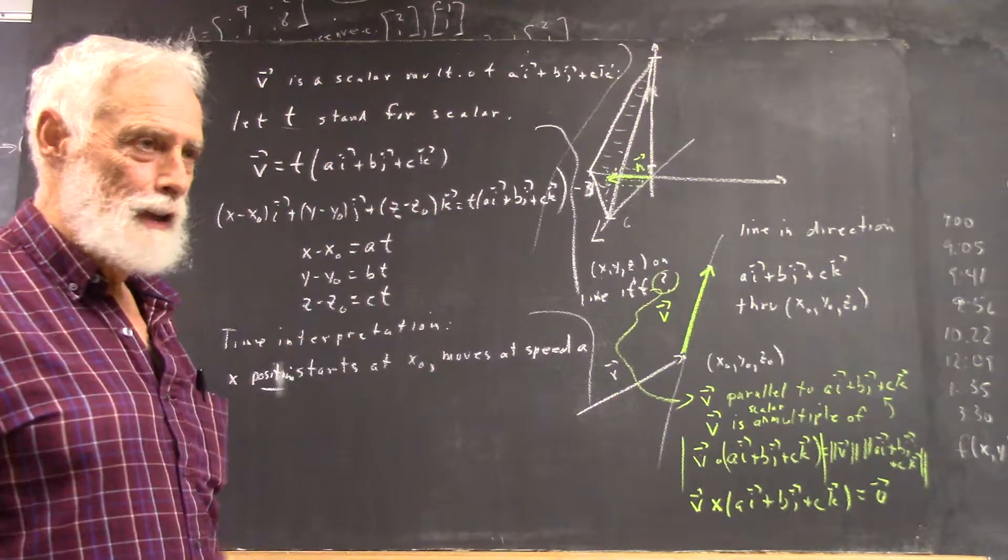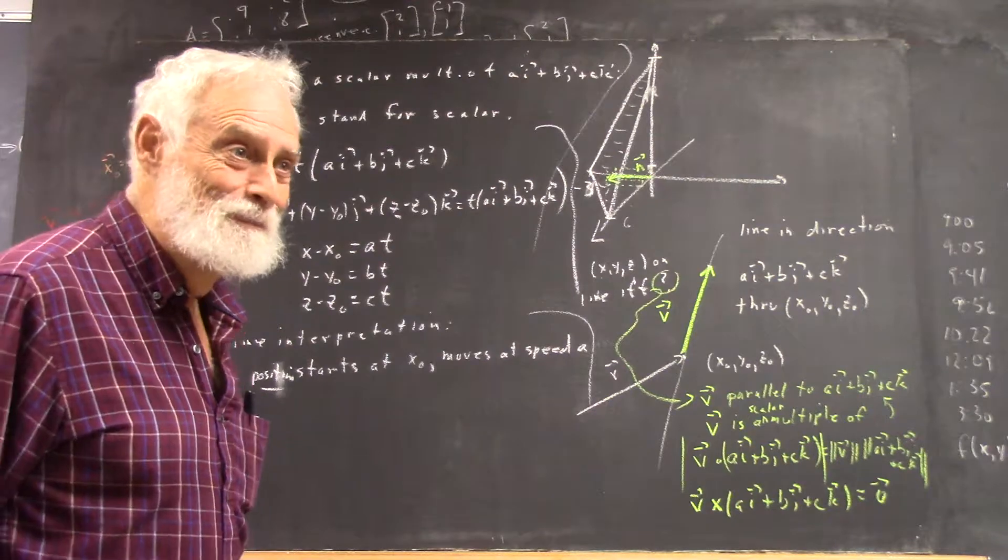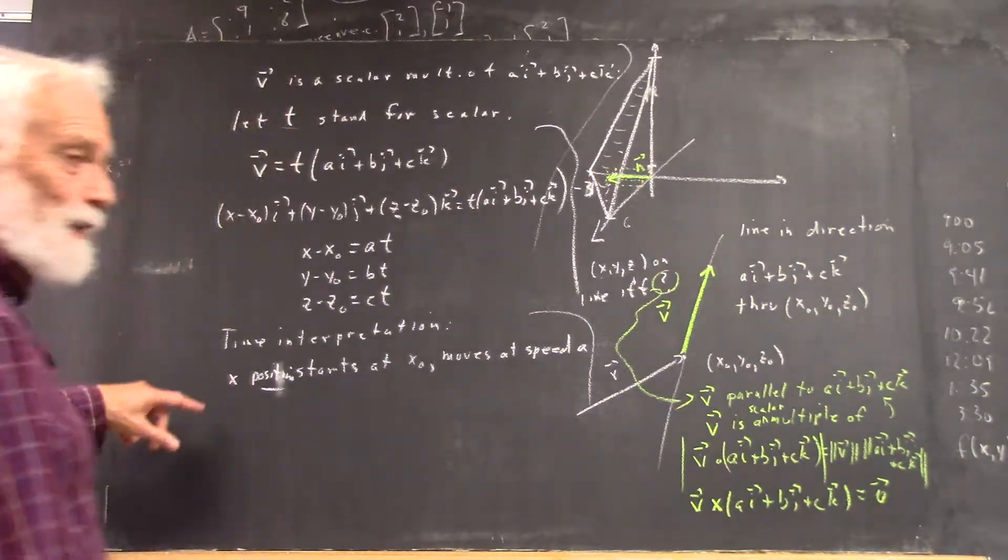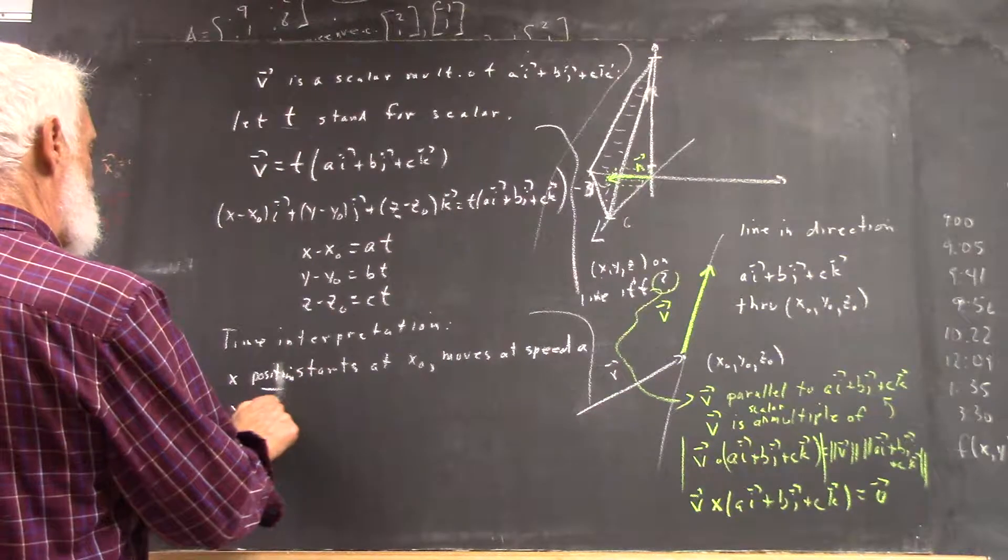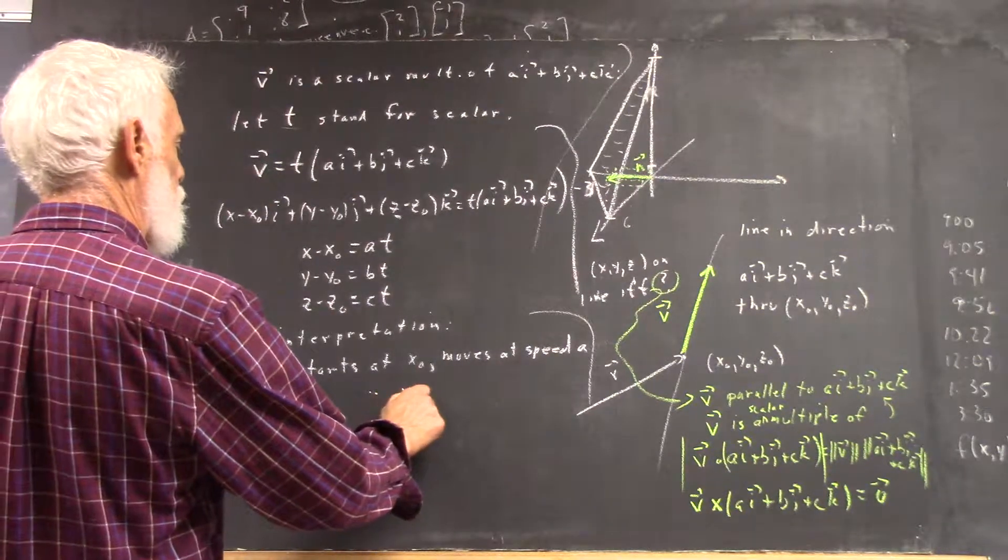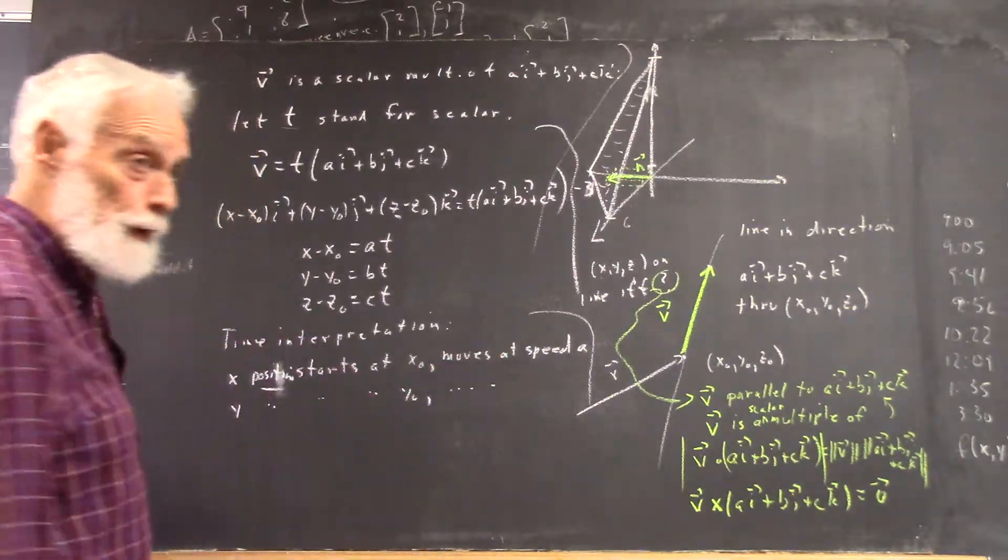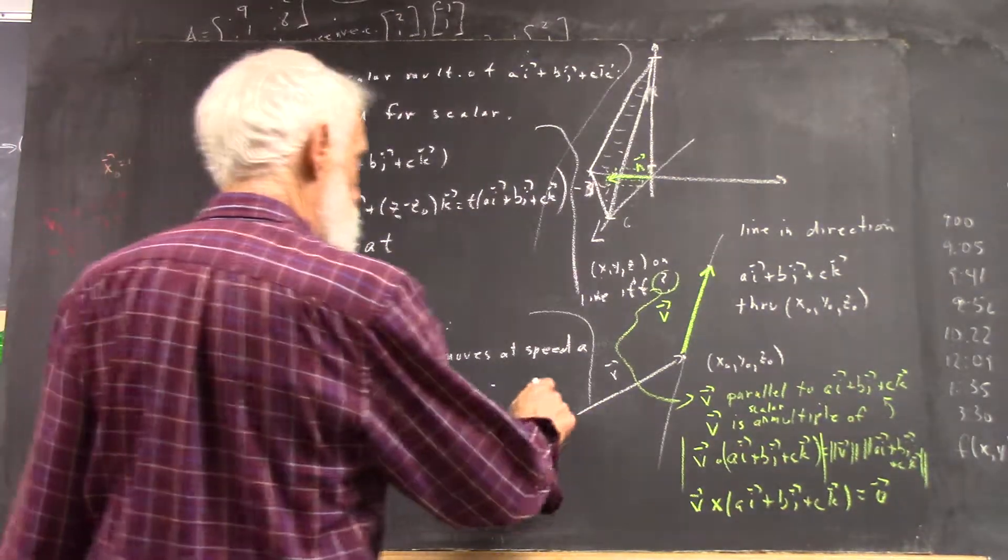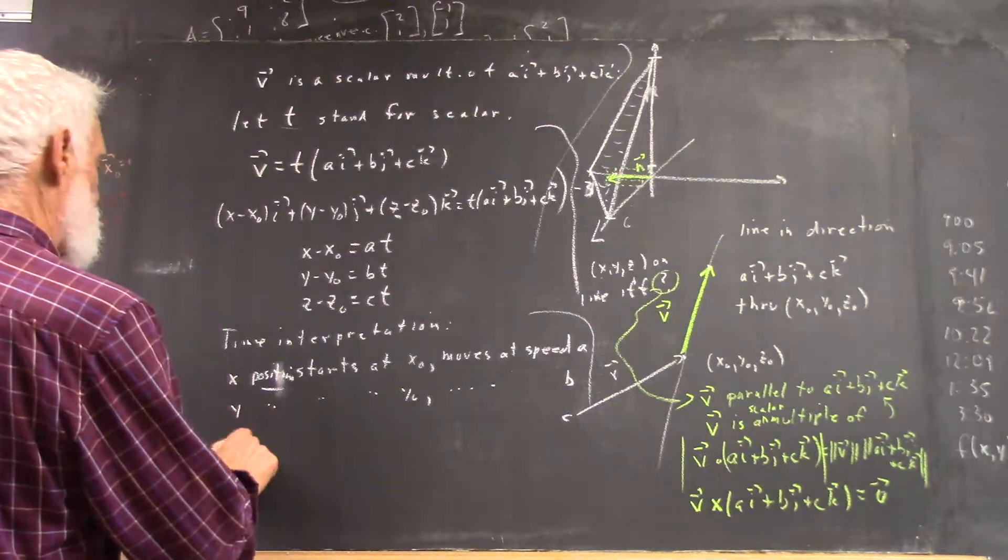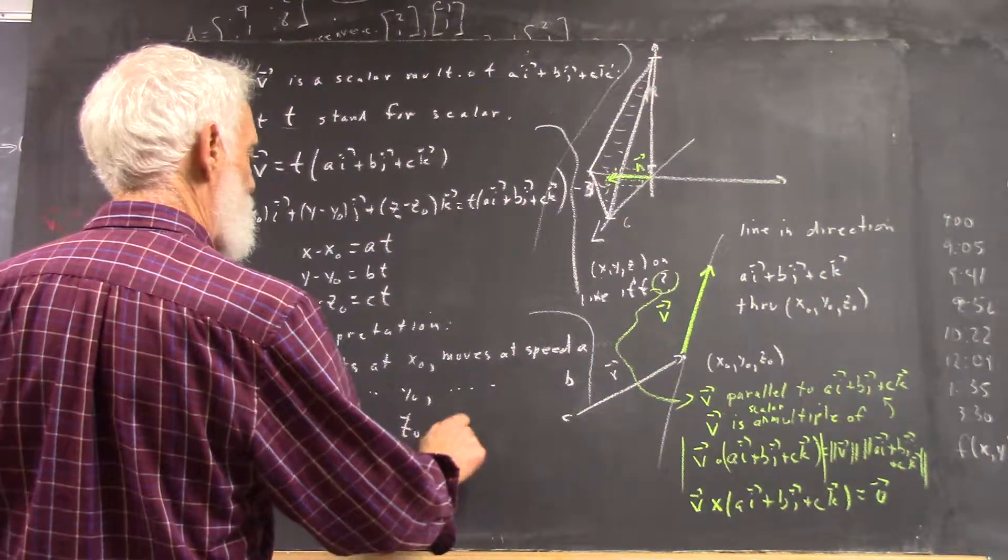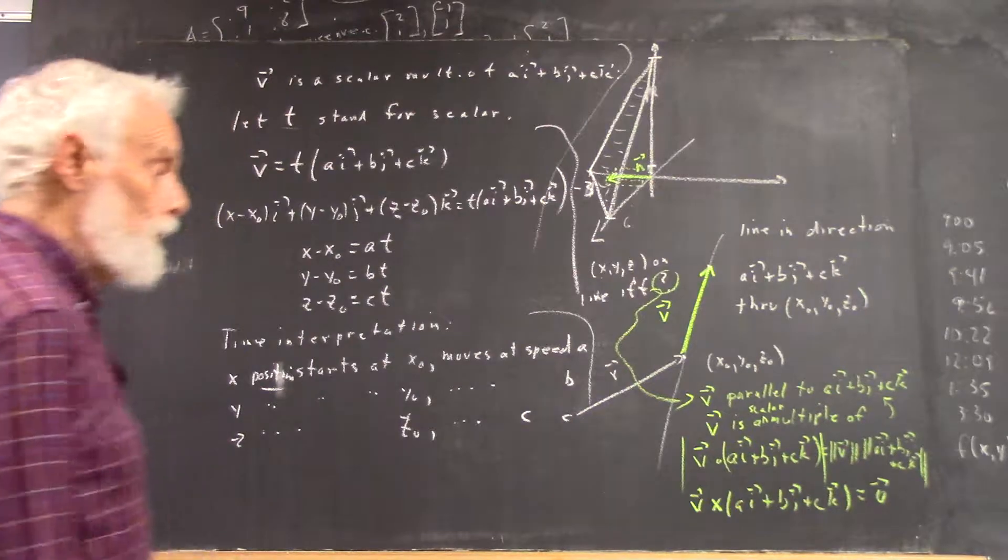And the y position starts at y-naught and so forth, right? And moves at speed b. And the z-coordinate starts at z-naught and moves at speed c.